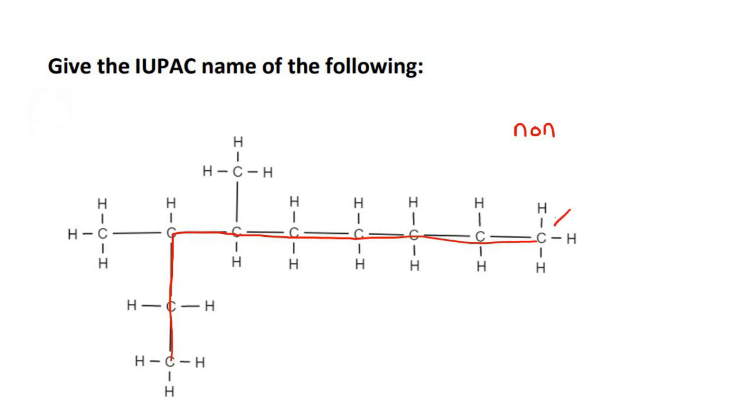If you had to start on this side, then this would be carbon one, two, three, four, five, six, seven, eight, and nine. If we did it like that, then the branches would be on carbon number six and carbon number seven.